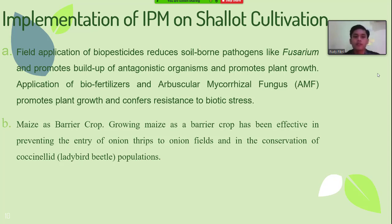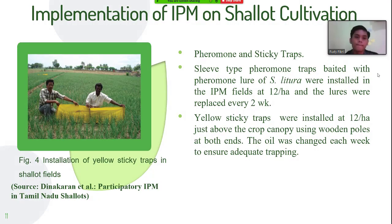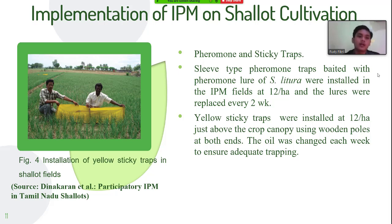Maize as a barrier crop: growing maize as a barrier crop has been effective in preventing the entry of onion thrips into onion fields and in the conservation of coccinellid, or ladybird beetle, populations. Sex pheromone traps are useful tools for monitoring, mass trapping, and timing of insecticidal application in the management of cutworms in onion fields. Sleeve-type pheromone traps baited with pheromone lures were installed in the IPM fields at 12 hectares, and the lures were replaced every two weeks.